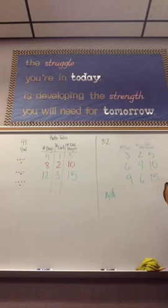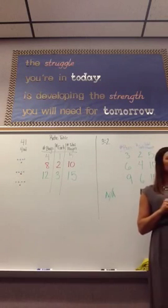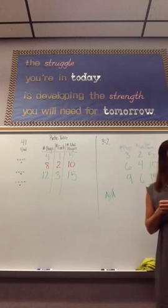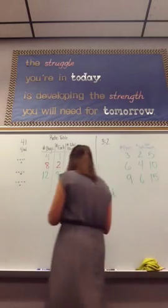So, number one on the lesson one homework says, At the sixth grade school dance, there's 132 boys, 89 girls, and 14 adults.